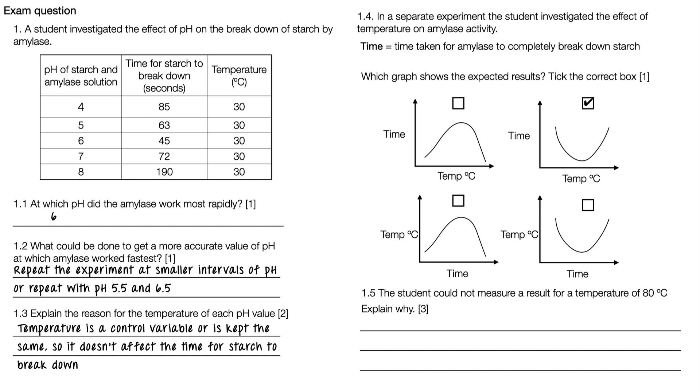1.5: The student could not measure a result for a temperature of 80 degrees Celsius. Explain why. This is worth three marks.